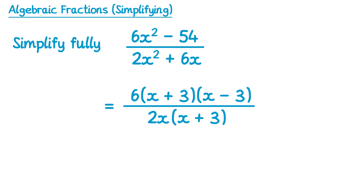Now we can cancel out the x plus 3 from the top and bottom, and we can also simplify the 6 over 2. If you simplify 6 over 2 you get 3 over 1, or 3. So what we're left with on the top is a 3 and then the bracket x minus 3, and on the bottom we're just left with x. If you wanted to at this point you could expand out that bracket, but this would be considered fully simplified still.